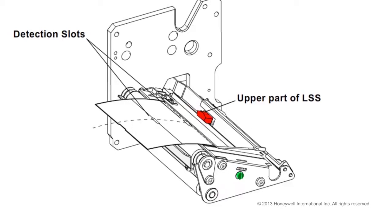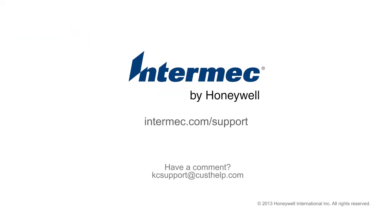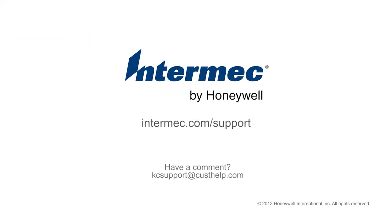As you make the adjustment, look at the print mechanism from the front with the printhead lifted to make sure that the point of detection on the upper sensor is aligned with the center of the slots or marks in the media. This concludes our video on the PX-6i printer.